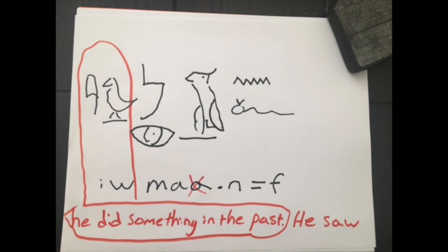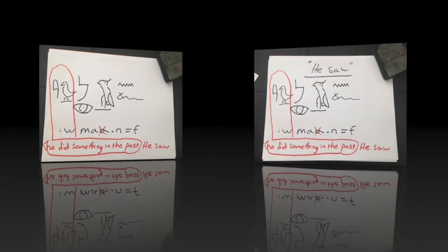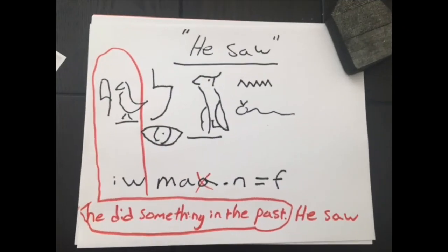Don't worry about the fact that iw means that whole sentence, they did something in the past. Just kind of accept it, it's part of hieroglyphics. Don't get hung up on it. You just kind of see it as a signpost, and it's there to help you. So you'll not translate this as he did something in the past, he saw, but just he saw, with the n and whatever suffix pronoun. You know, she saw, they saw, we saw, feminine version of you.